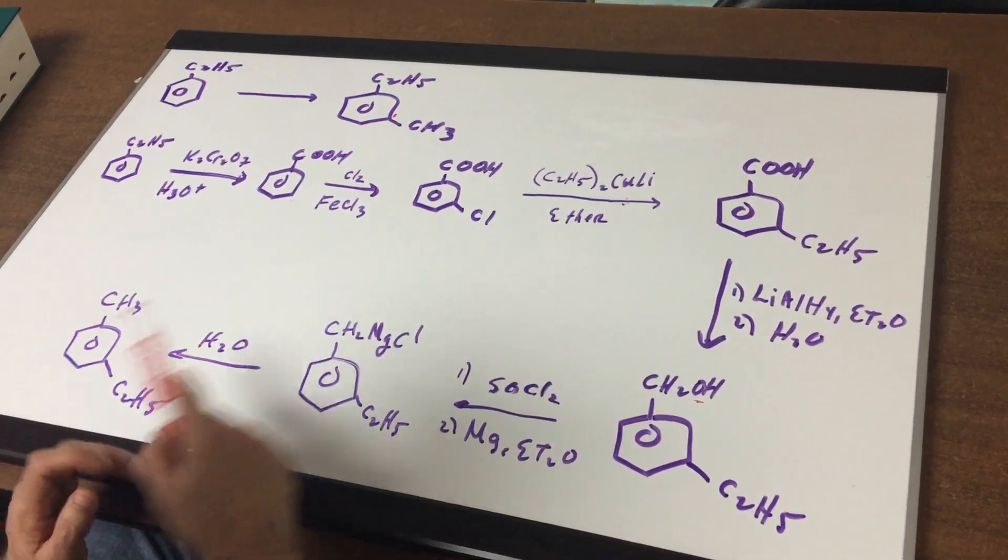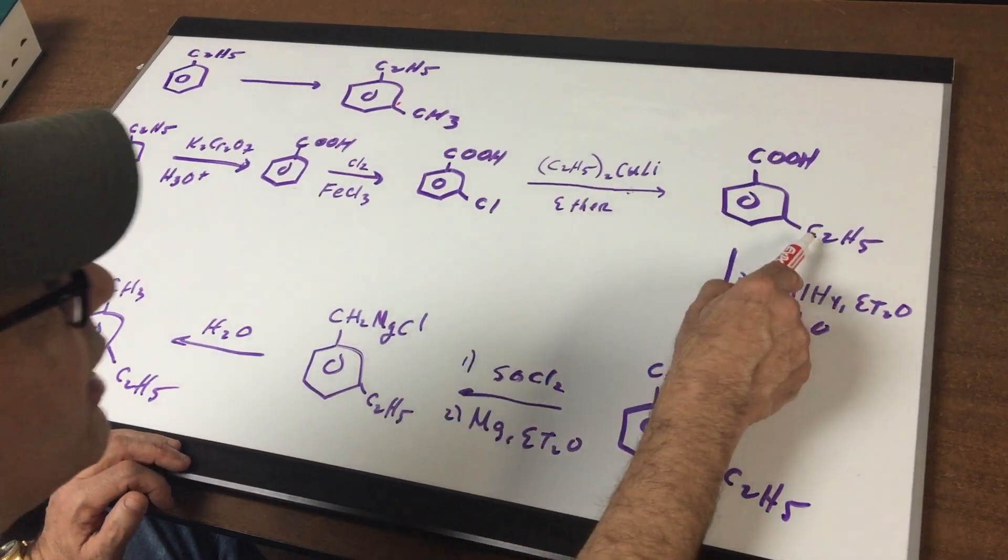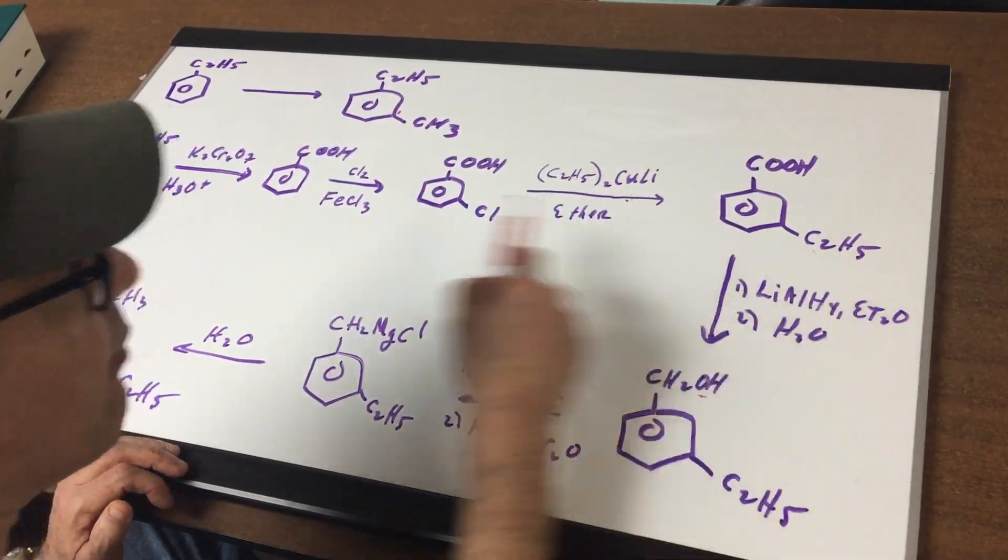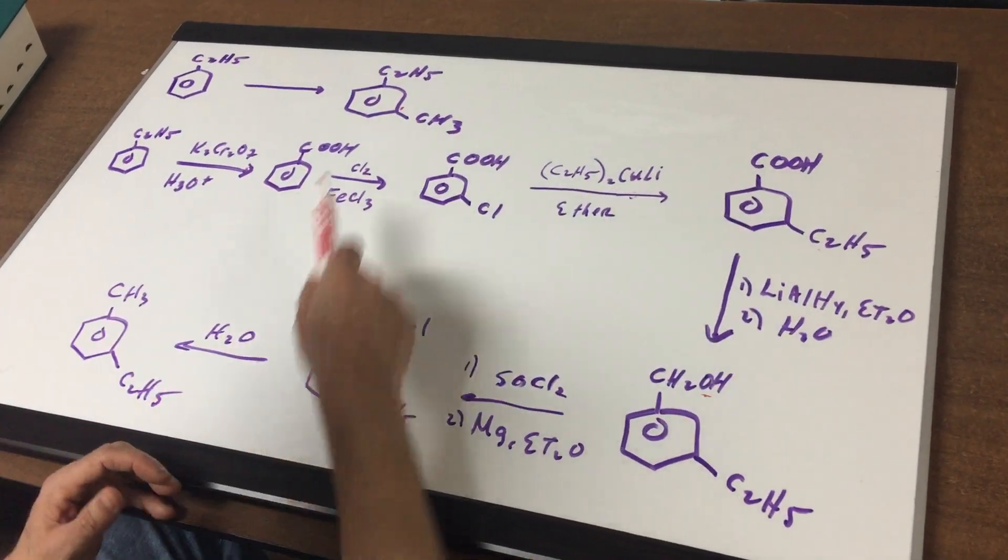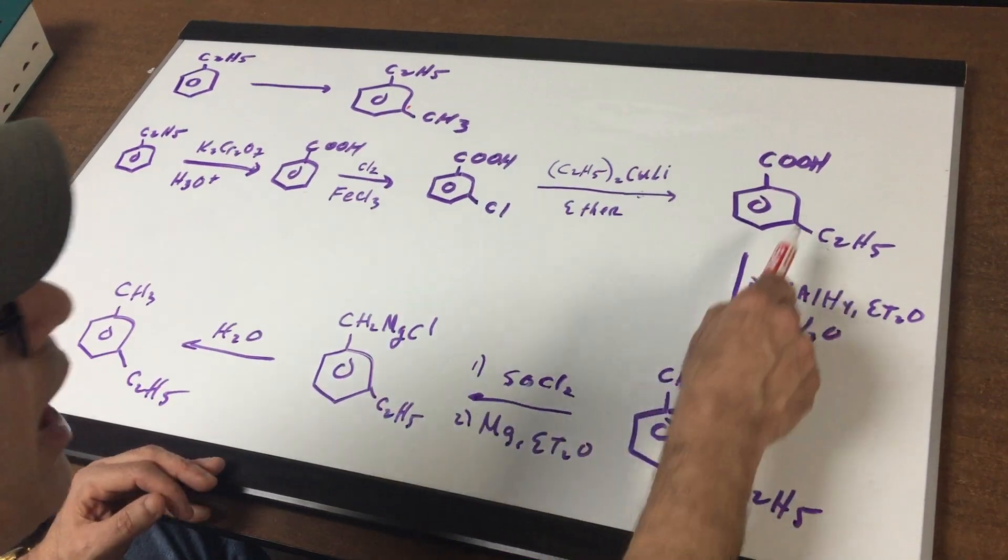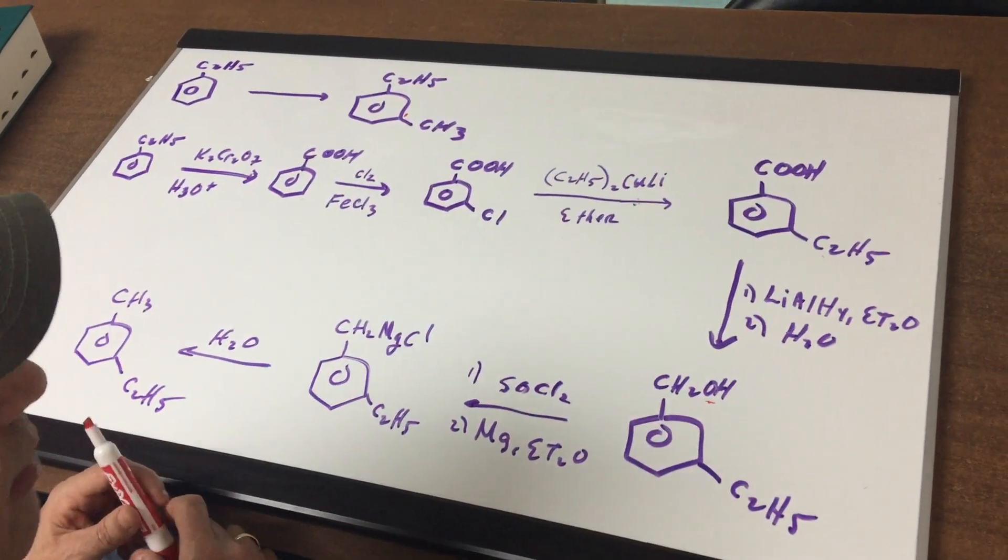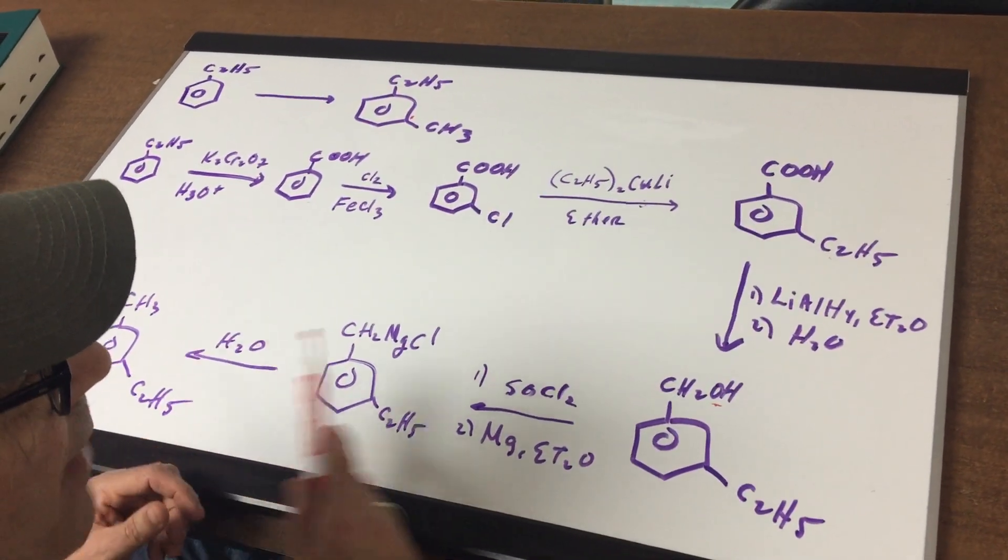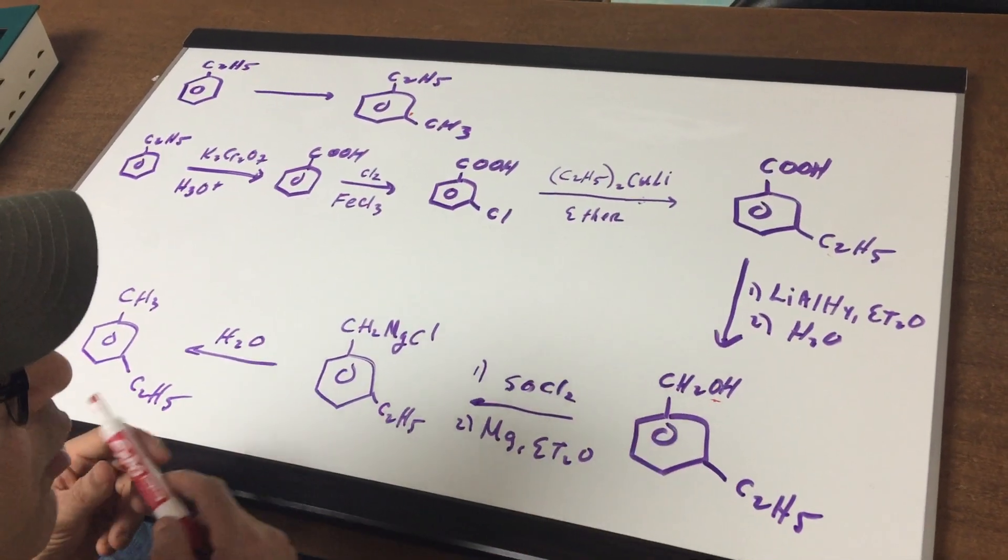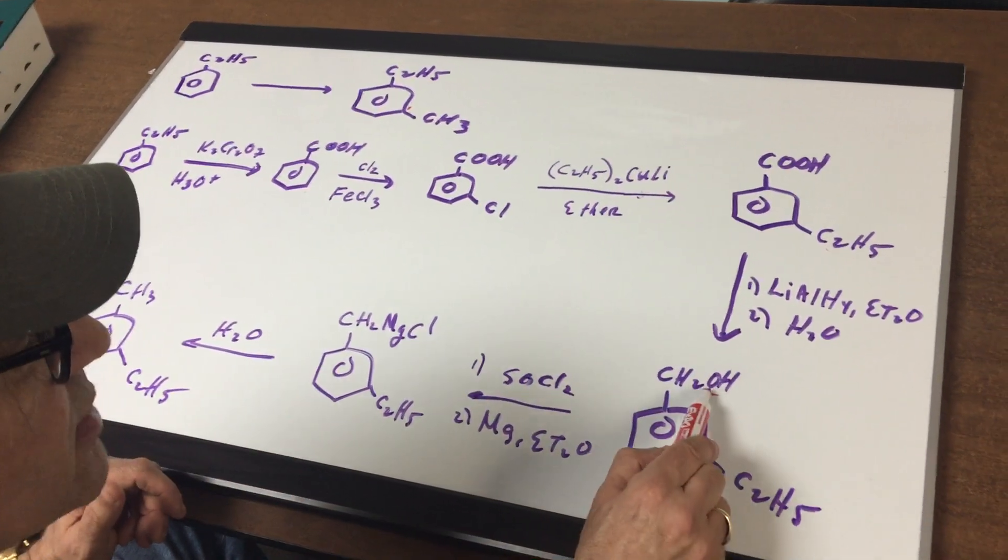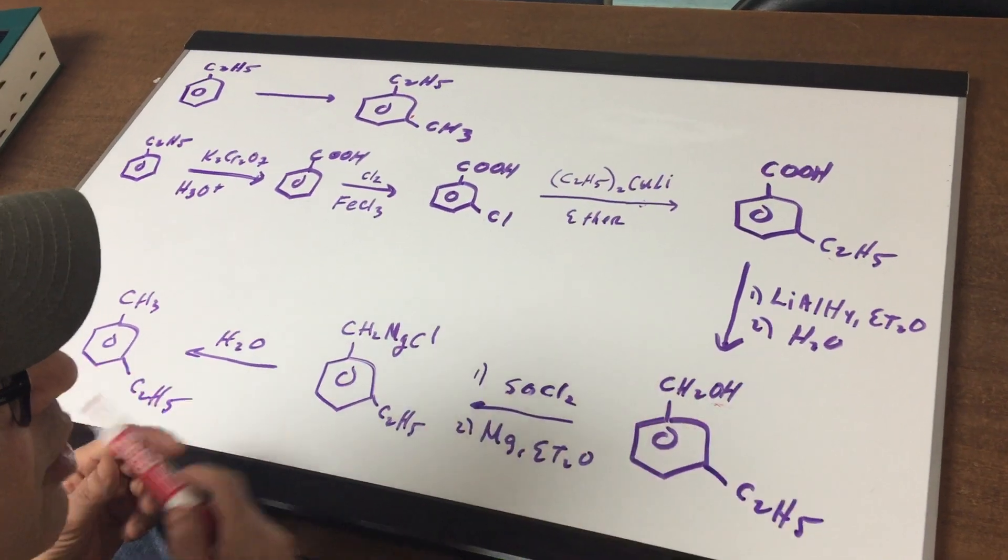I did the Corey-House reaction in which I replaced the chlorine with the R group. Here I elected to use an ethyl group because I need an ethyl on my ring. I then reduced this compound down. The reduction of the carboxylic acid gives the alcohol. Now the question is, all I got to do is to take this OH group into an H.